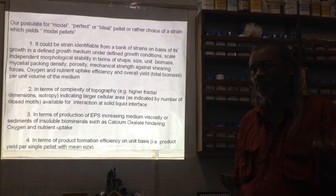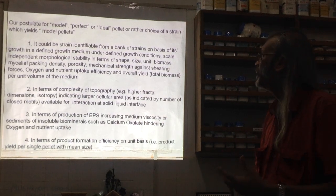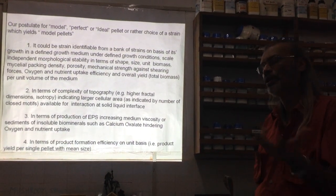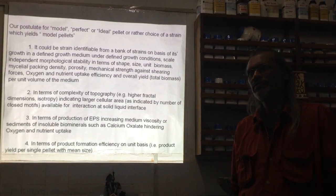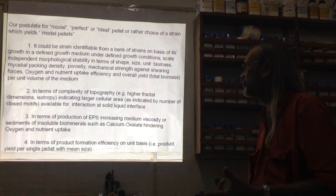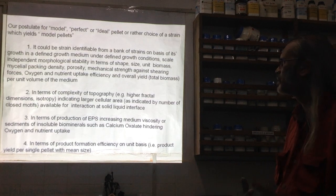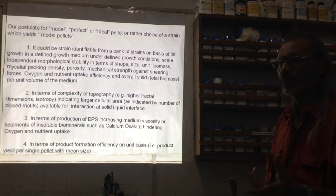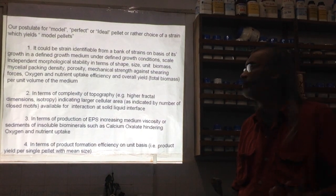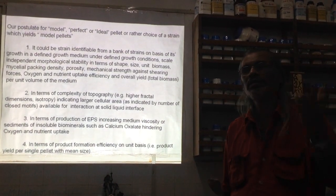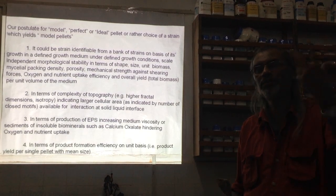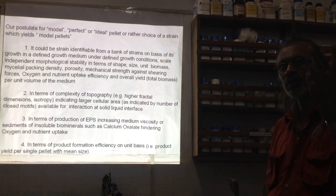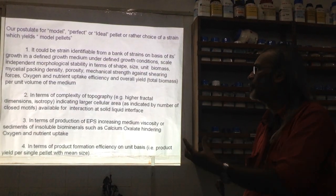Oxygen and nutrient uptake efficiency is very important and would also define our idea of a model pellet. Overall, in terms of the population of pellets formed in the fermenter, their total biomass summed over the number of pellets per unit volume of medium gives us an idea of the ideal. A model pellet tells us the best pellet with maximum yield at a particular stable morphology dimension. All these parameters can be brought together under point one.